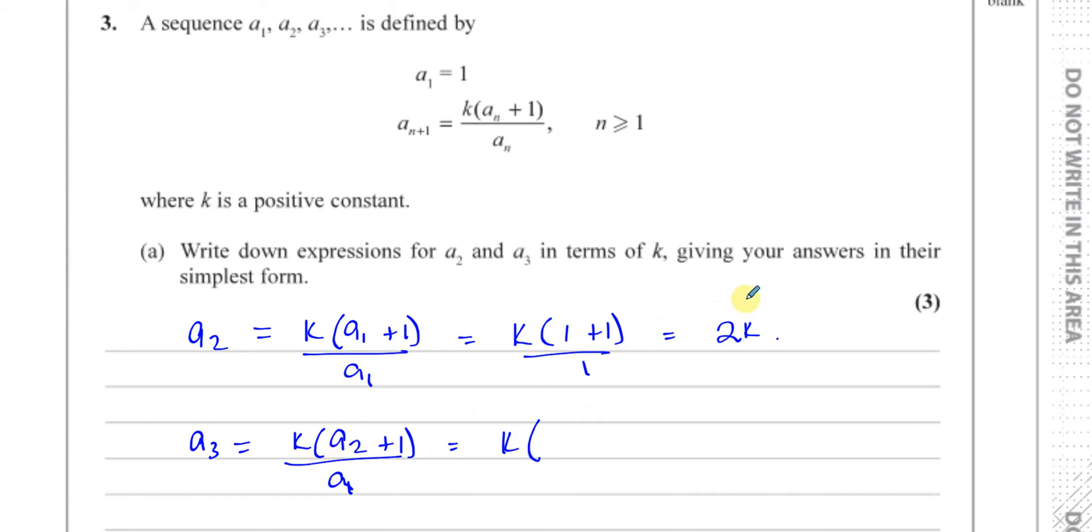Which gives us k times, now we know that a2 is 2k, so you've got k times 2k plus 1 over 2k. So in the simplest form the k here will cancel with the k and we're left with 2k plus 1 over 2.